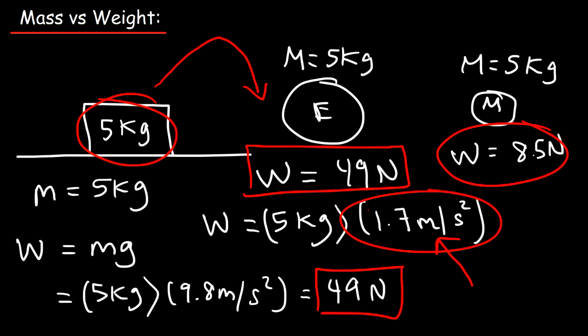So keep this in mind. Mass and weight, they're different. They're proportional, but they're different. Mass is associated with the quantity of matter. It's also a measure of inertia. And weight is a force that is dependent on gravitational acceleration.